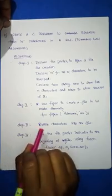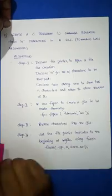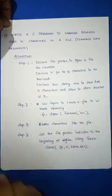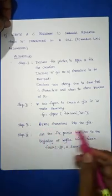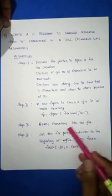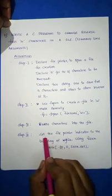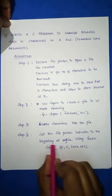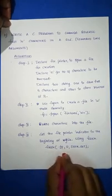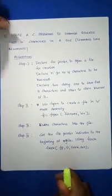In step two, use fopen to create a file in write mode: fp = fopen(filename, "w+"). In step three, write something into the file using fputs or fputc. In step four, set the file pointer to the beginning of the file using fseek. We start from the beginning because we need the first N characters, so that's why we write zero here.